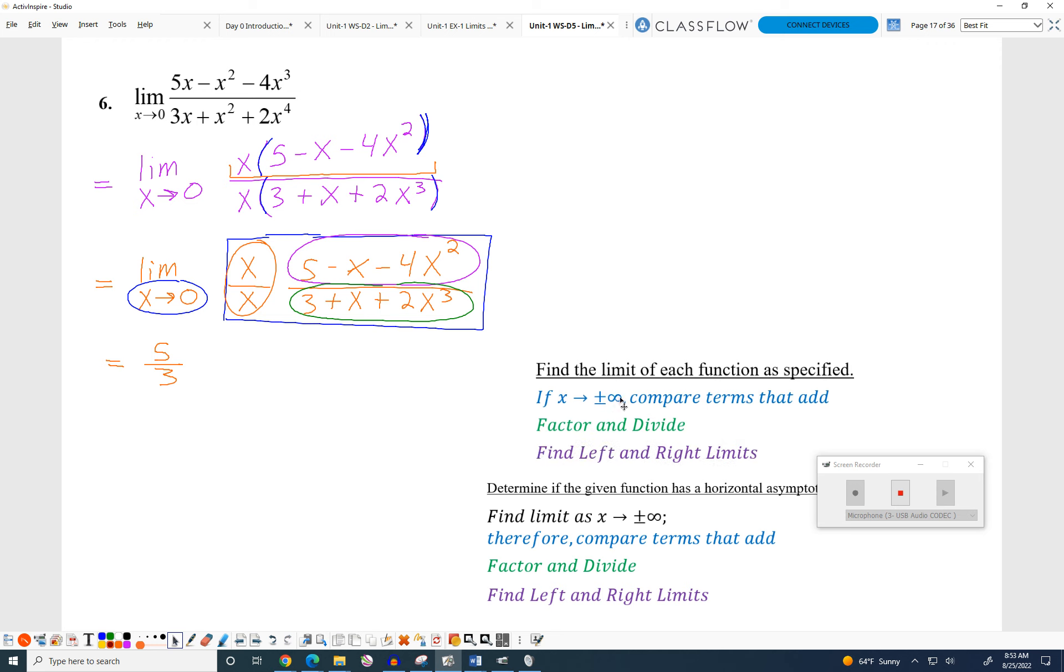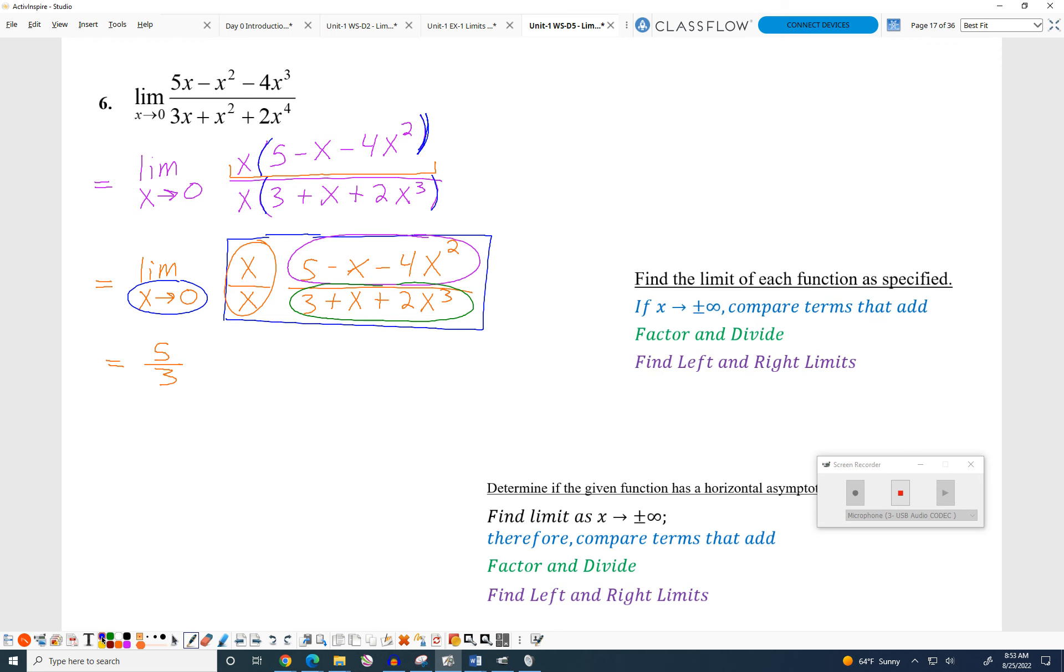Cool. Now we just do the horizontal asymptote stuff. So move this out of the way. Once again, factoring did not change the problem. It just made it easier to understand. So there's no reason to go back to the beginning. We can start our work basically here. But even simpler, we can say we're looking for the limit as X approaches infinity. X divided by X, when X gets bigger and bigger and bigger, is still going to be one. So we just have this. Five minus X minus 4X squared all divided by 3 plus X plus 2X cubed.